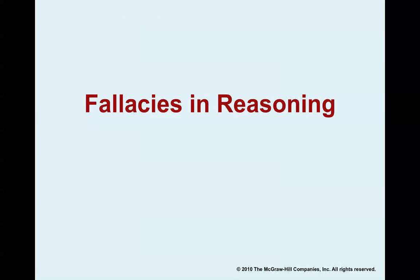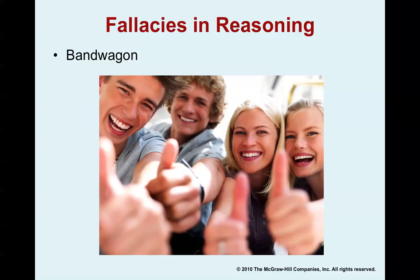Now let's look at fallacies in reasoning. A fallacy is an error that renders an argument false or unreliable — you want to avoid them in your own speeches, and as a listener, you need to recognize them in others' arguments. The bandwagon fallacy goes like this: everybody's buying lottery tickets, so jump on the bandwagon and buy yours today. It's a fallacy to assume that if something is popular, then it must be wise and good.